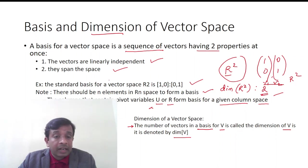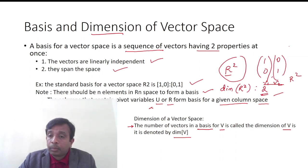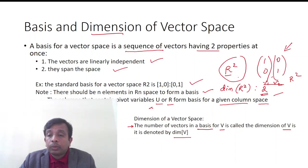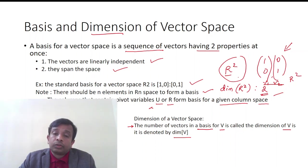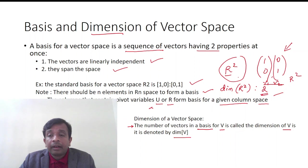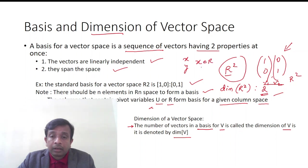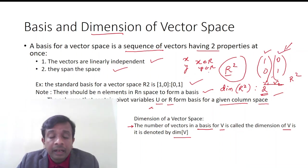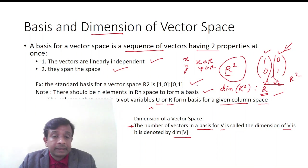For example, the standard basis for vector space R2 is {[1,0], [0,1]}. These vectors can be used to get any R2 vector — that is, they span the entire vector space R2, where x and y belong to R. These column vectors span the entire R2 space.